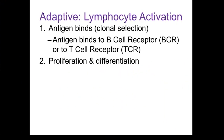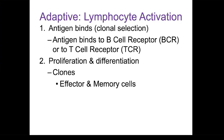Once the binding occurs — once you have the clonal selection — the lymphocyte begins to divide and multiply. That is proliferation. The daughter cells will all have the same receptors, meaning they will recognize and bind with exactly the same antigen. So they will be clones of the original lymphocyte, identical to it and able to recognize the same antigen as the mother cell that was activated.